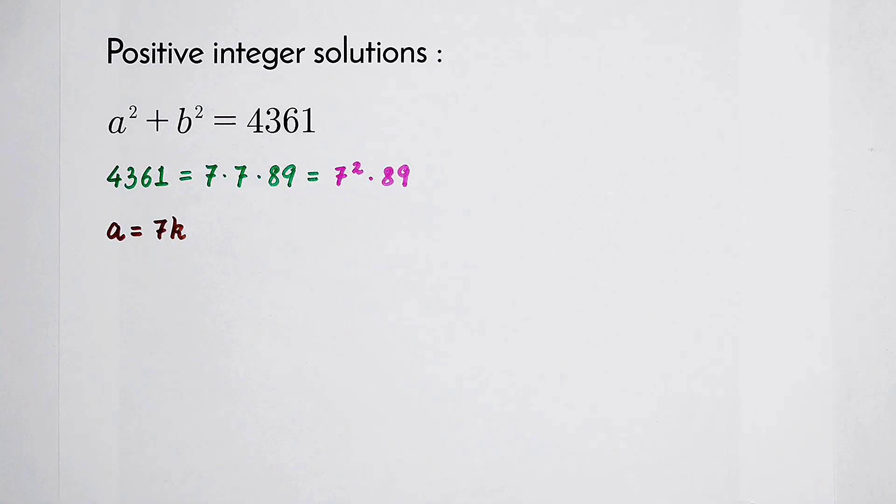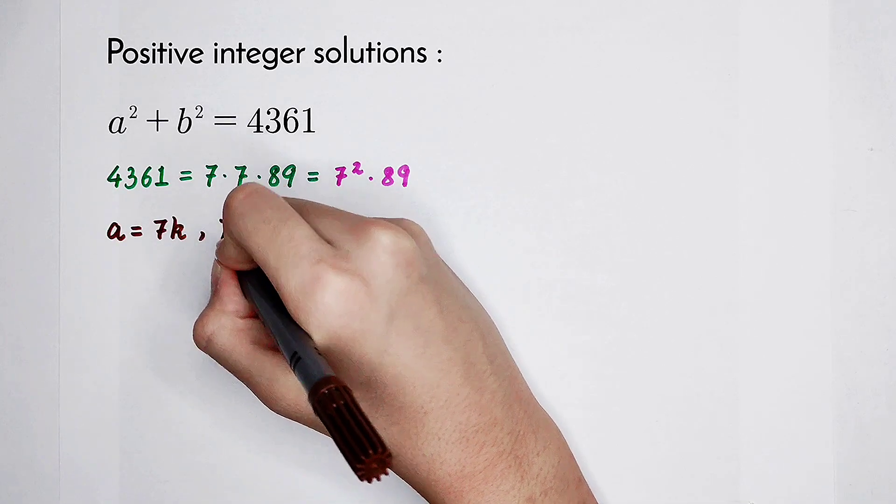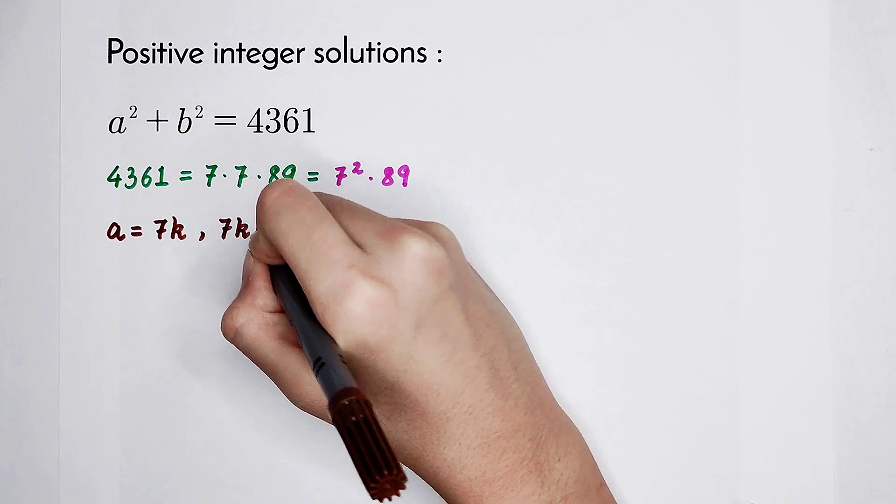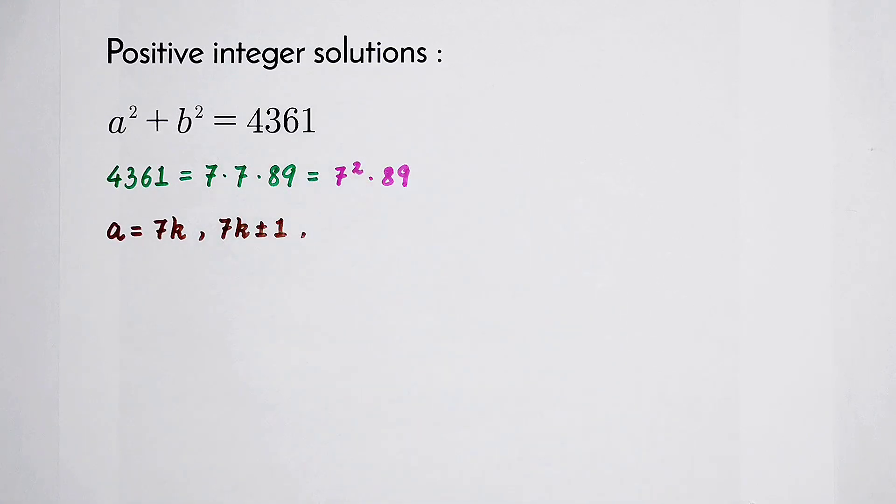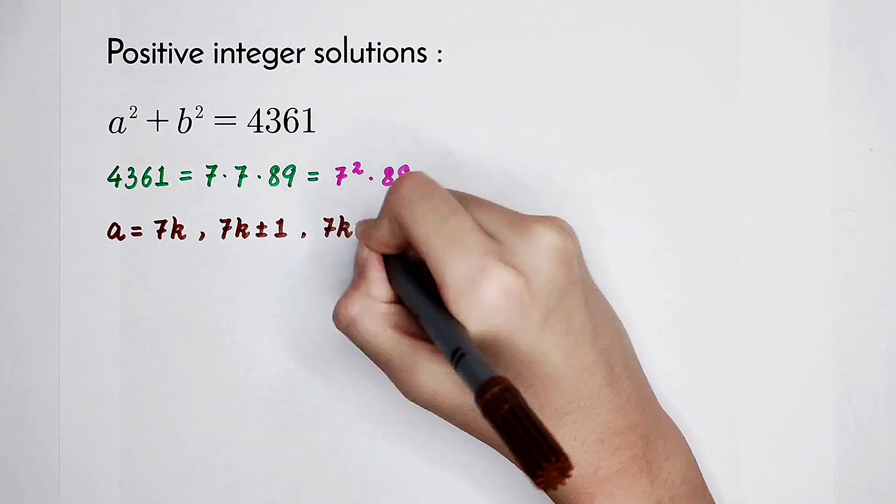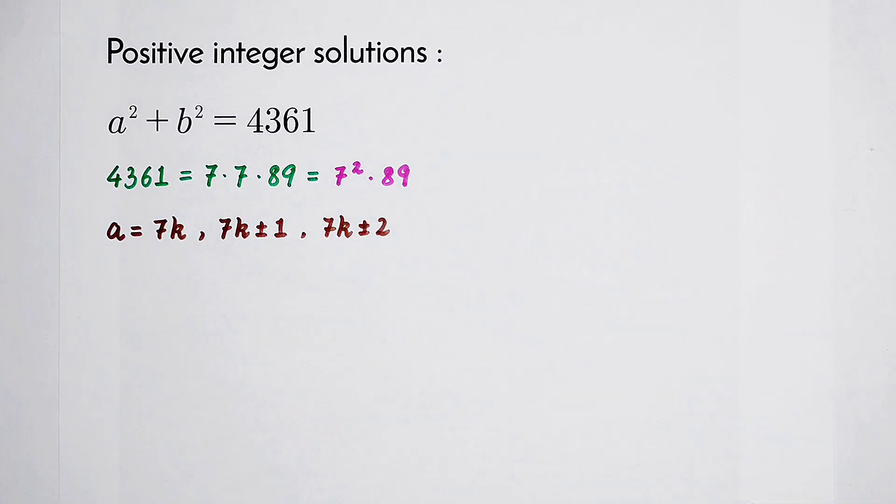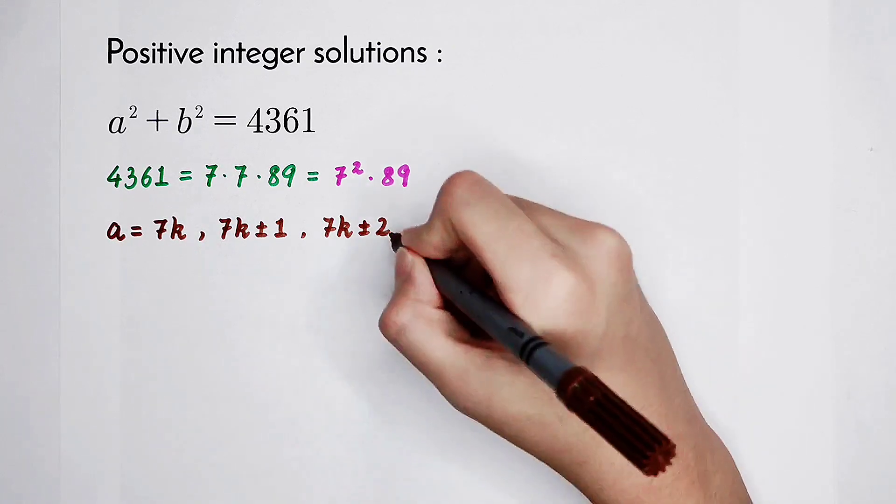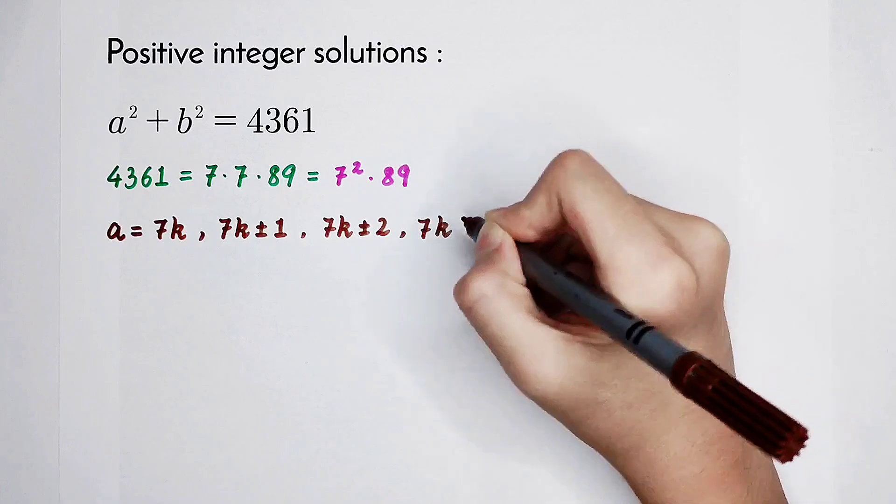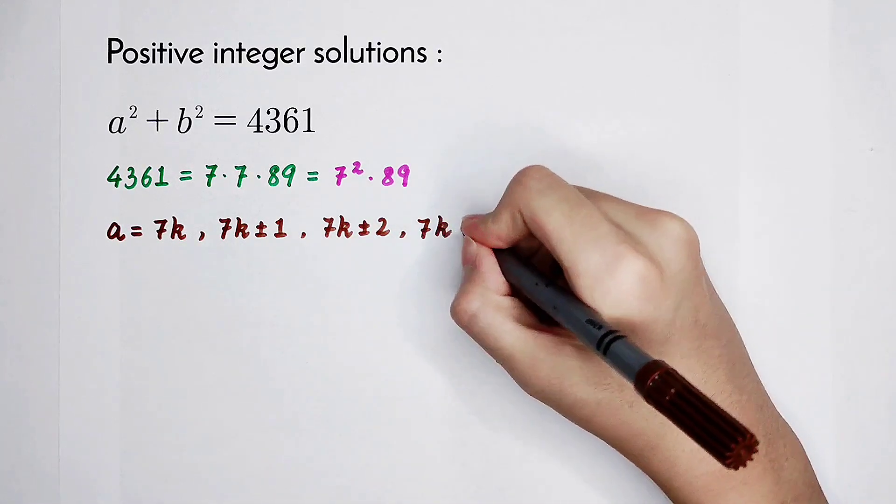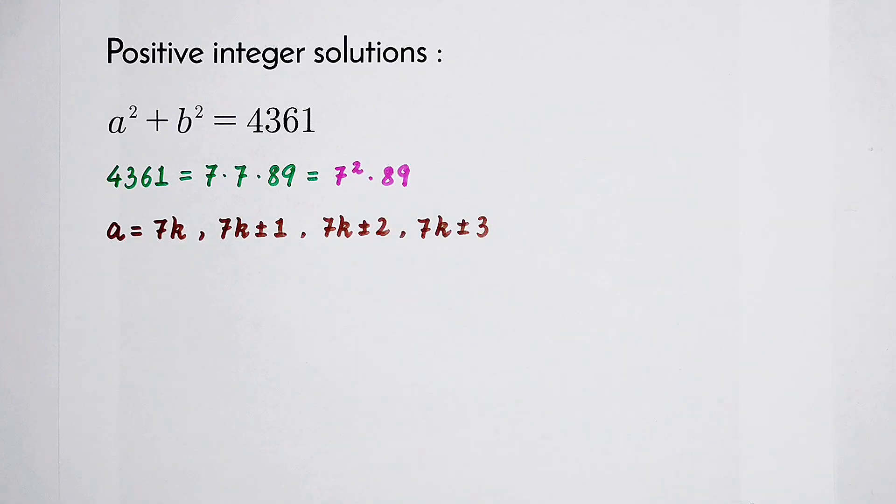The second thing: if a is congruent to 6 or 1 mod 7, that means a equals 7k plus or minus 1. The third thing is 7k plus or minus 2, meaning a is congruent to 2 or 5 mod 7. The last thing: if a is congruent to 3 or 4 mod 7. There are no more cases, just these 4.